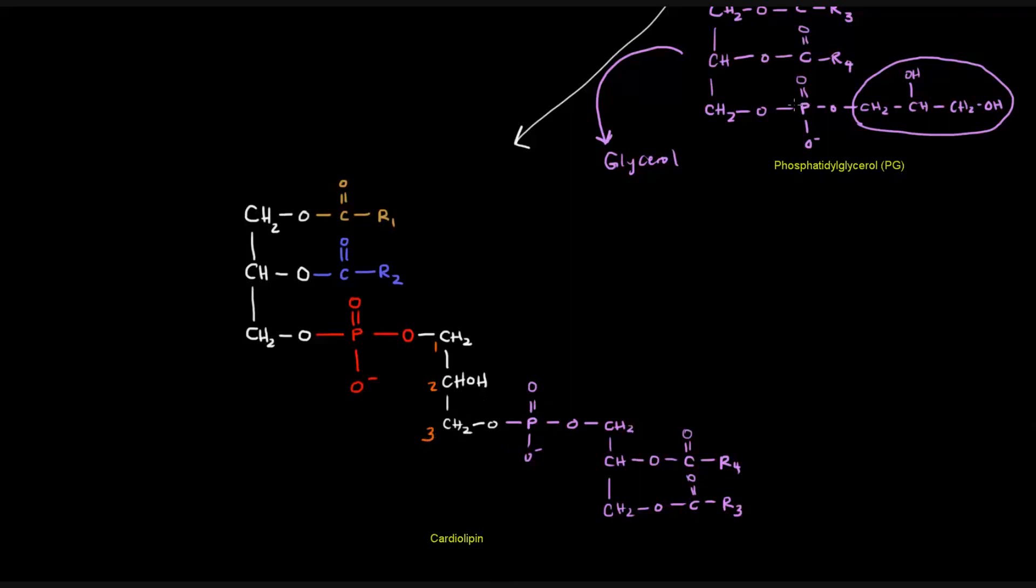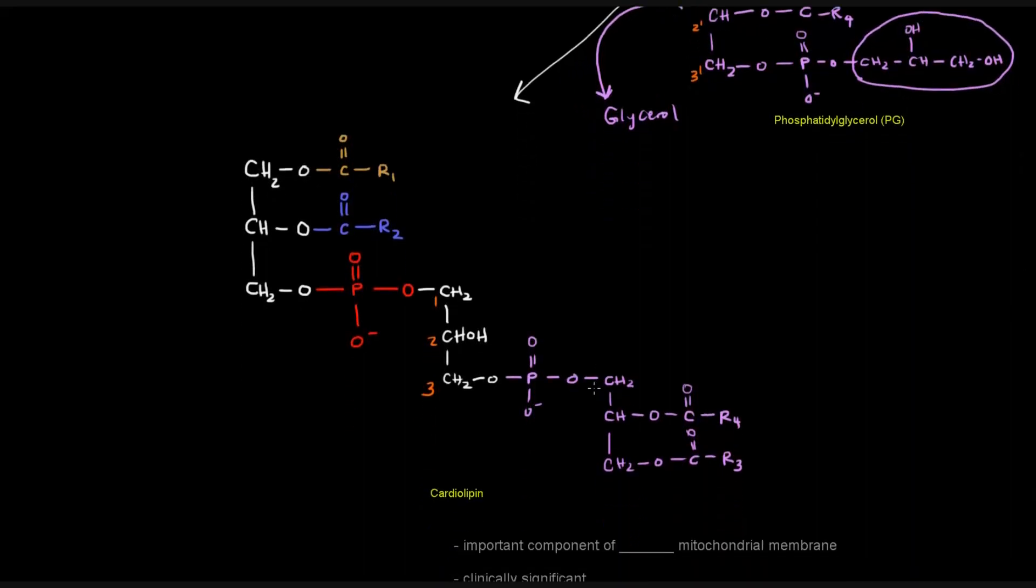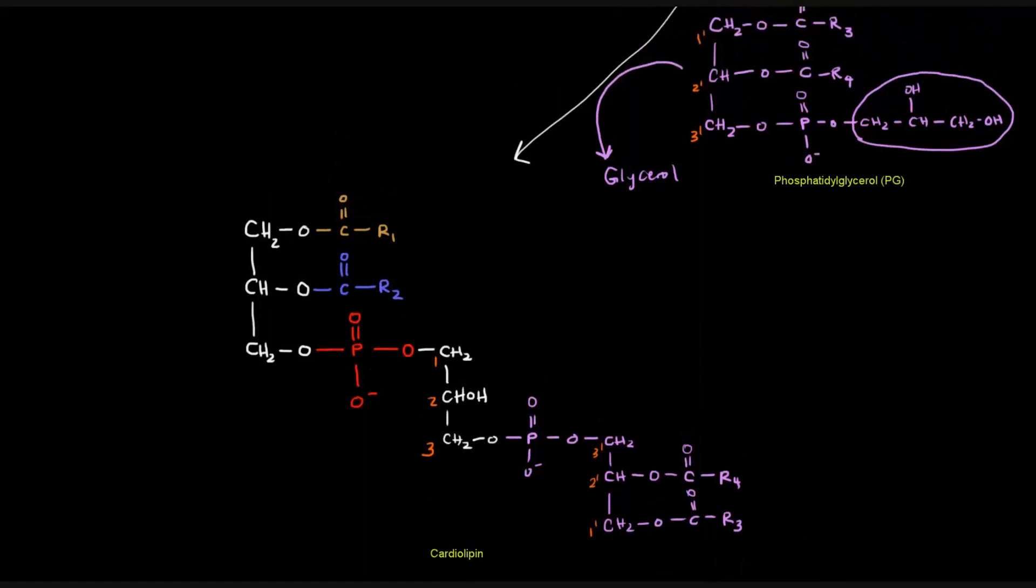And that phosphate is connected to number three on this glycerol. So if I call this three prime, two prime, and one prime, just to indicate that they're different, this carbon here is going to be three prime. This is going to be two prime and one prime. And that should make sense because it might be confusing just looking at this at first and seeing that the R3 is on top, R4 is on the bottom. And then in the product where we get this molecule called cardiolipin,